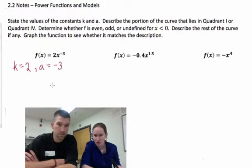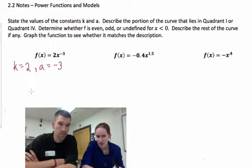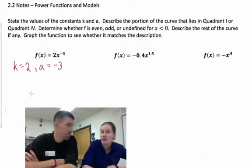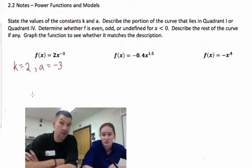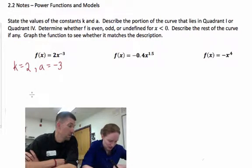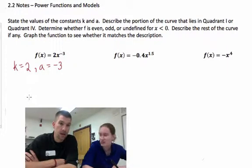If k is positive, then the graph lies in quadrant 1. k is positive. The graph is going to be in quadrant 1. So we know it's going to be in quadrant 1 and it wants us to describe the portion of the curve that lies in quadrant 1.